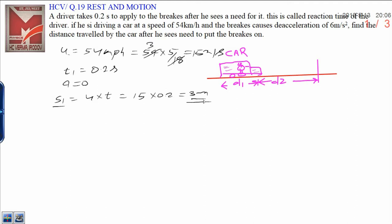3 meters is the initial displacement covered by the car when the brake is applied. Now, in order to calculate the total distance, you need to solve the question by a different manner. S1 is 3 meters.